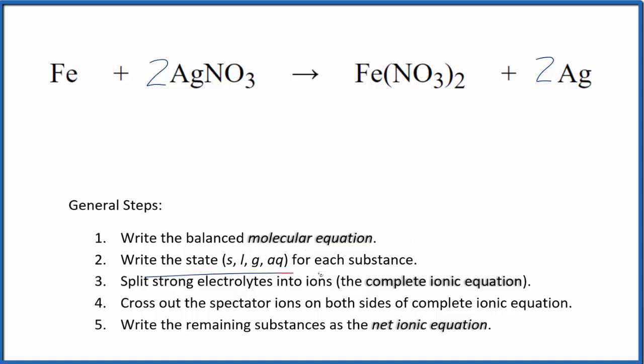Now we can write the state for each substance. Iron, that's a solid, and then nitrates are very soluble. So we'll put an AQ after each of the nitrates. And then silver, that's a metal as well.